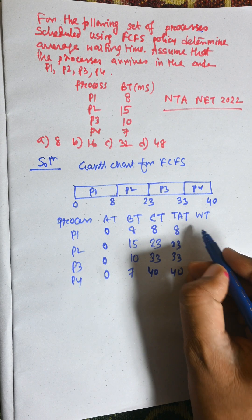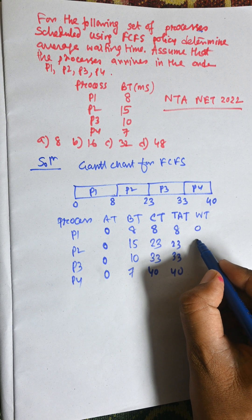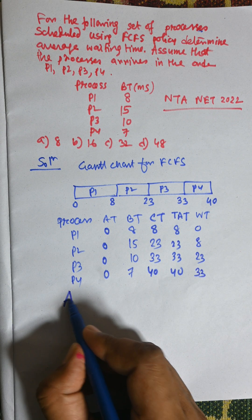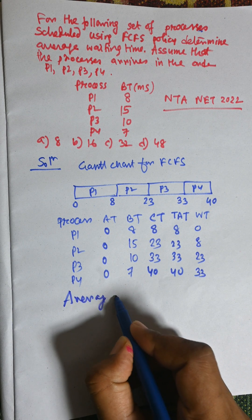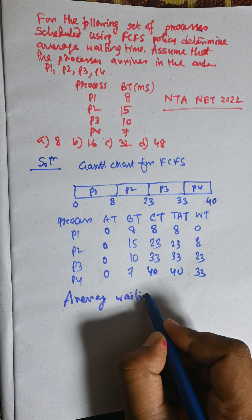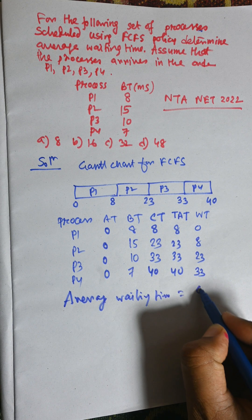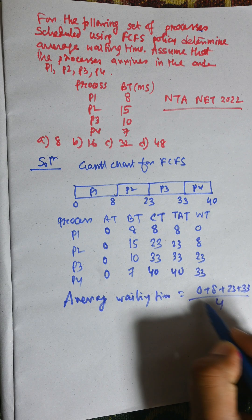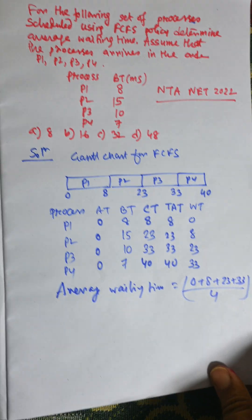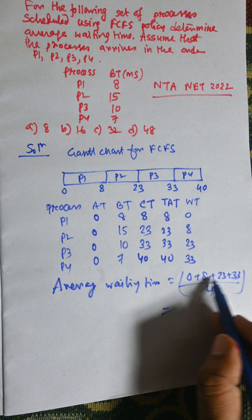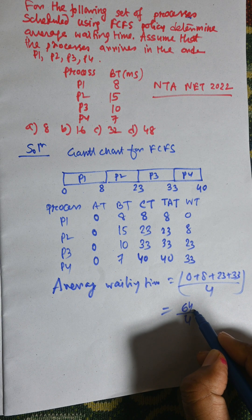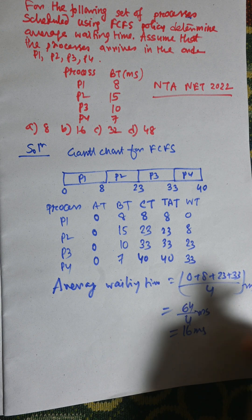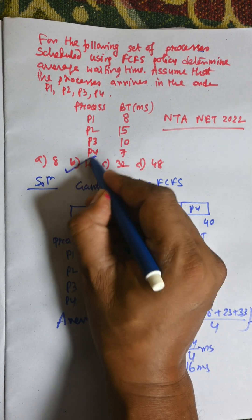Finally, waiting time equals turnaround time minus burst time. Waiting times are: P1 = 0, P2 = 8, P3 = 23, and P4 = 33. Average waiting time equals 0 plus 8 plus 23 plus 33 divided by 4, as there are four processes. That equals 64 divided by 4, which is 16 milliseconds. So the correct answer is option B, 16 milliseconds.